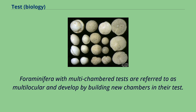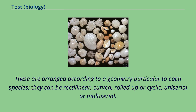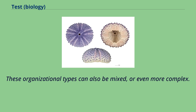Foraminifera with multi-chambered tests are referred to as multilocular, and developed by building new chambers in their test. These are arranged according to a geometry particular to each species; they can be rectilinear, curved, rolled up or cyclic, uniserial or multiserial. These organizational types can also be mixed or even more complex.